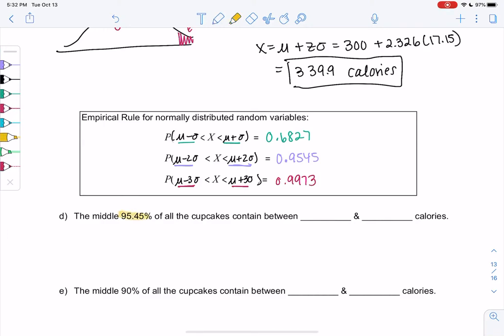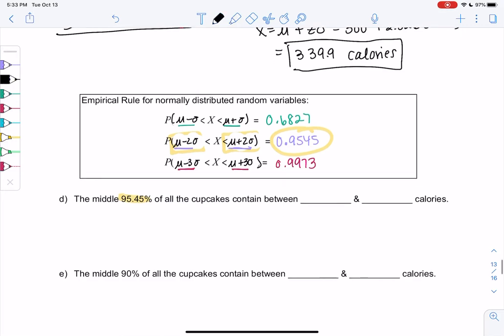We're going to use that information to find the middle 95.45% of all cupcakes. This empirical rule tells me that it's in between two standard deviations. It's basically the same as the expected range, actually. So we have the middle 95.45, and we don't need to find the z-score. The z-score is two and negative two, that's from the empirical rule. So we're just going to do the mean plus or minus two sigma. And I got the two from the empirical rule, so that number will change in example E.